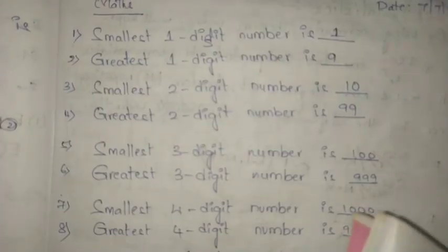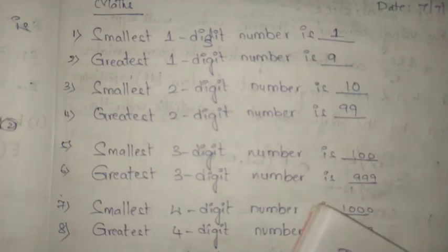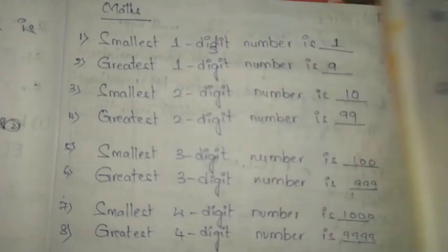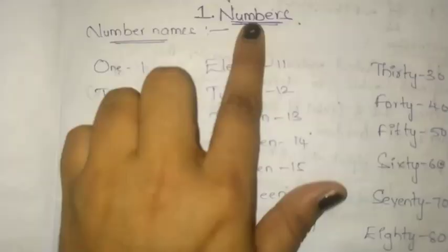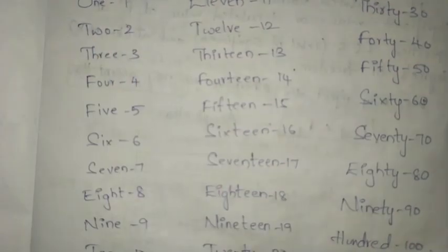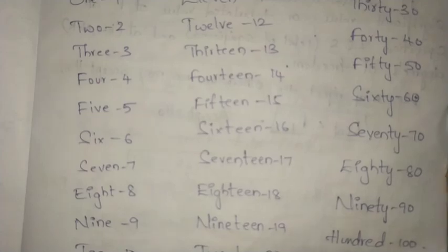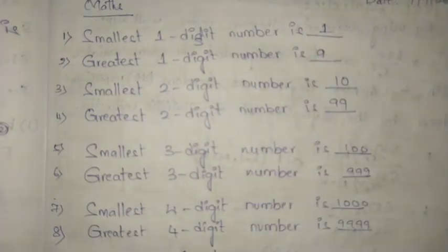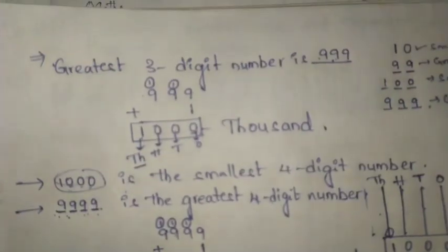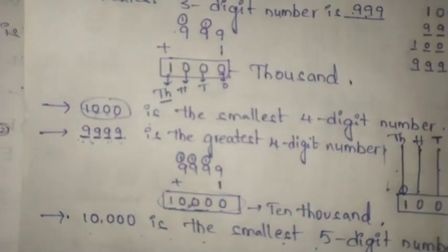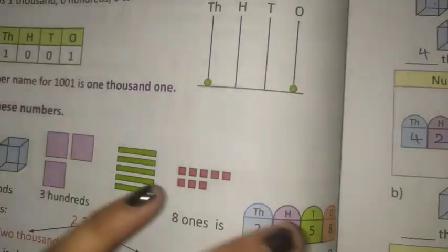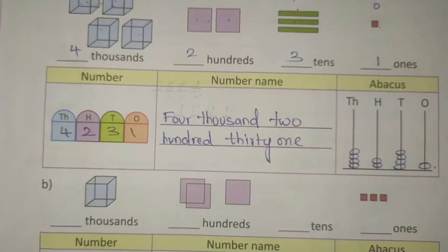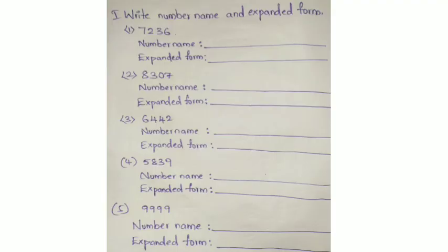Okay, what is your homework? You have to write number, number name, and expanded form. I hope you understood what I said. The chapter heading is Numbers. Write number names. Complete Exercise 1 total with homework — write in textbook with pencil only. Thank you. Bye.